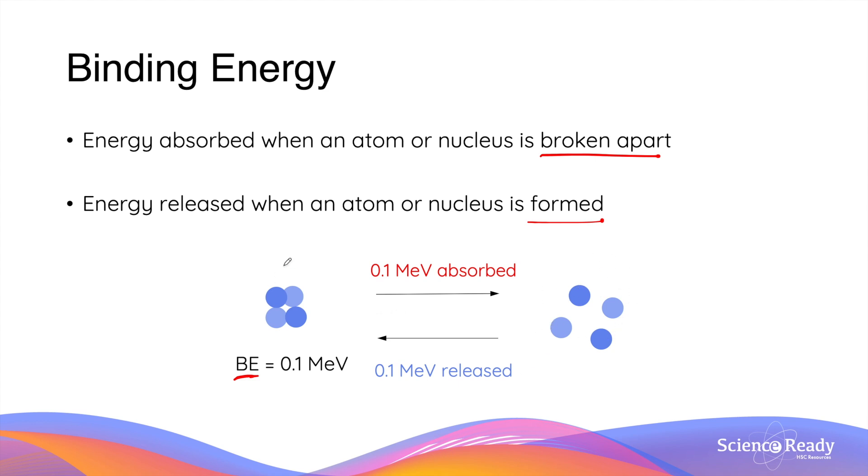And when the nucleus is reformed from these four particles, the same amount of energy, 0.1 MeV, is released. So what you need to know is that binding energy is absorbed when the nucleus or atom is broken apart and the same amount of energy is released when the nucleus or atom is being formed.